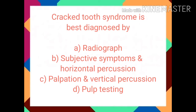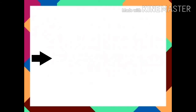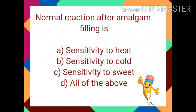Let's move on to the first slide. Here is a question: 'The cracked tooth syndrome is best diagnosed by?' The options are: A) Radiograph, B) Subjective symptoms and horizontal percussion, C) Palpation and vertical percussion, or D) Pulp testing. The answer is B — subjective symptoms and horizontal percussion.